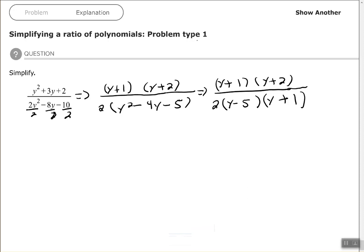Now after it's completely factored, that's when you want to simplify. So I'll look at my numerator and my denominator and see what I can simplify, and I see that I have a y plus 1 in my numerator and a y plus 1 in my denominator, so they will cancel each other out. So my final answer would be y plus 2 over 2 times y minus 5.